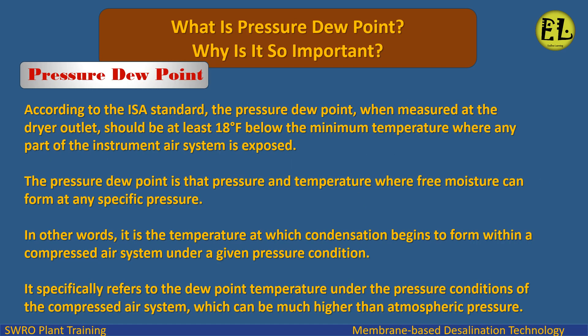What is pressure dew point and why is it so important? According to the ISA standard, the pressure dew point, when measured at the dryer outlet, should be at least 18 degrees Fahrenheit below the minimum temperature where any part of the instrument air system is exposed. The pressure dew point is the temperature and pressure where free moisture can form at any specific pressure. In other words, it is the temperature at which condensation begins to form within a compressed air system.